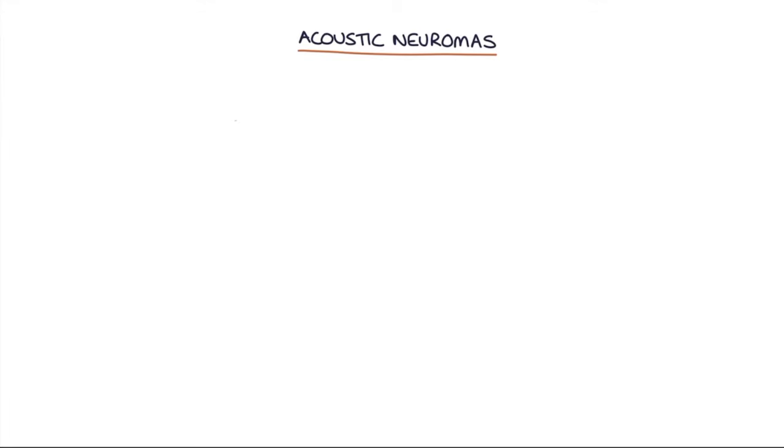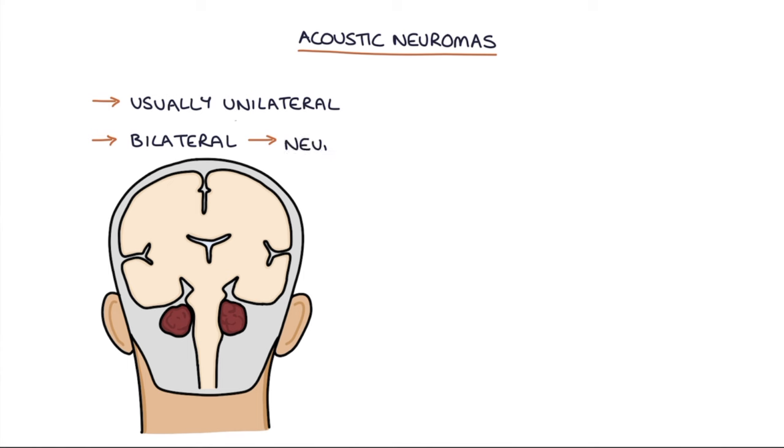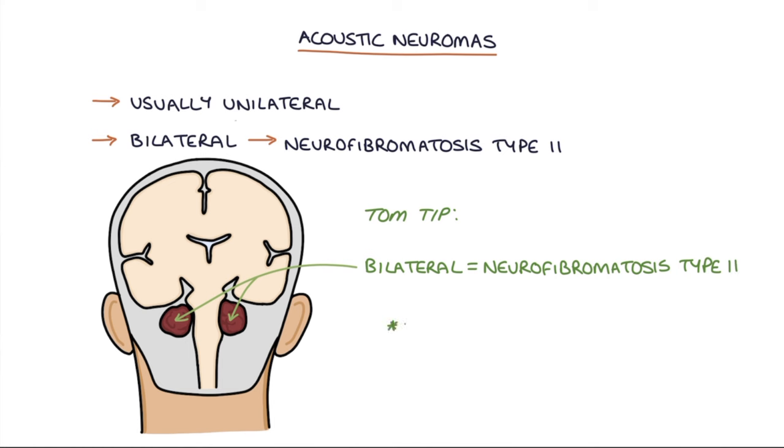Acoustic neuromas are usually unilateral. Bilateral acoustic neuromas are associated with neurofibromatosis type 2. A Tom tip for you: bilateral acoustic neuromas almost certainly indicate neurofibromatosis type 2. This is a popular association in exams so it's worth remembering.